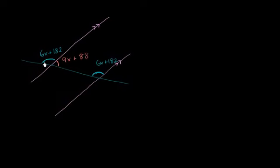When you make them adjacent, their outer rays form a line. So we know that 6x plus 182 plus 9x plus 88 equals 180 degrees.